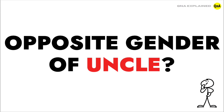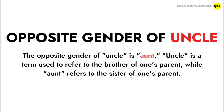What is the opposite gender of uncle? The opposite gender of uncle is aunt. Uncle is a term used to refer to the brother of one's parent, while aunt refers to the sister of one's parent.